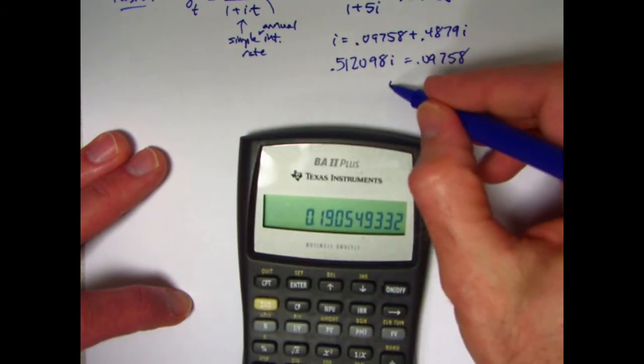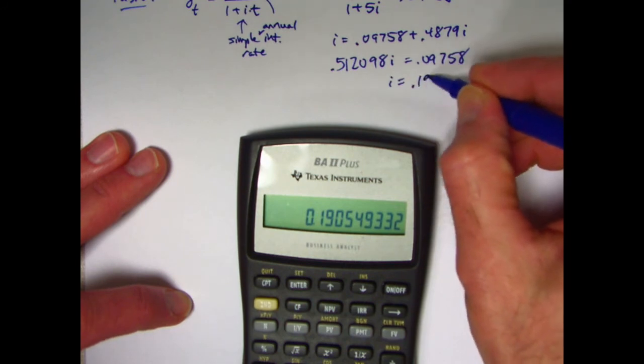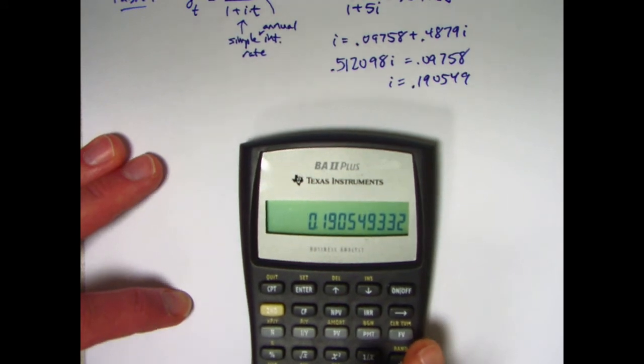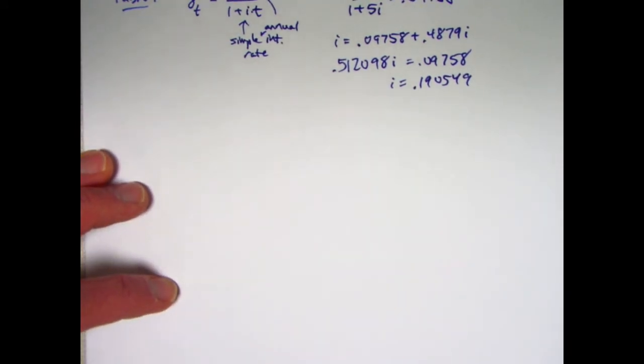Looks like I, with a pretty high interest rate, 0.190549. That's what I is. Once we've got I, now we can finish the problem.